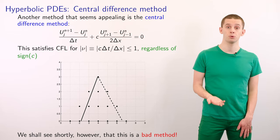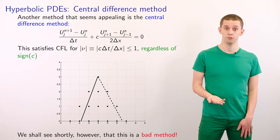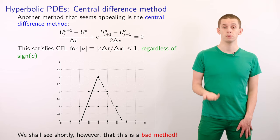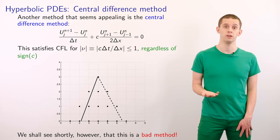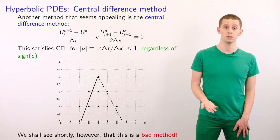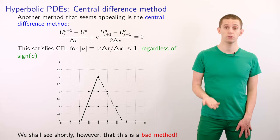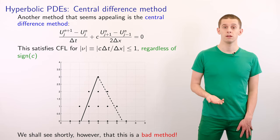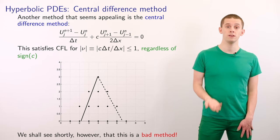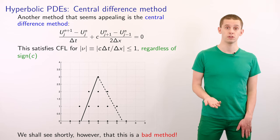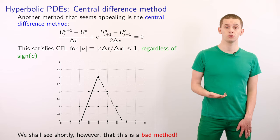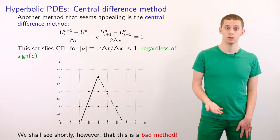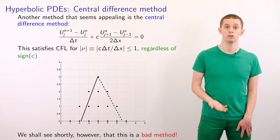Another method that seems appealing is the central difference method where we would use a centered finite difference for our spatial discretization. So therefore we would have the scheme u n plus 1 j minus u n j divided by delta t plus c u n j plus 1 minus u n j minus 1 over 2 delta x is equal to 0. And if we drew the numerical domain of dependence then we would now have a triangle that extends in both the negative and positive directions. And therefore this would satisfy the CFL for any nu with magnitude less than or equal to 1 regardless of the sign of c. Unfortunately though we'll see that this is a bad method in practice. And this highlights how the CFL condition is a necessary condition but sometimes not sufficient for obtaining a convergent numerical method.